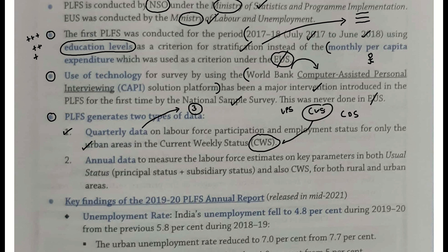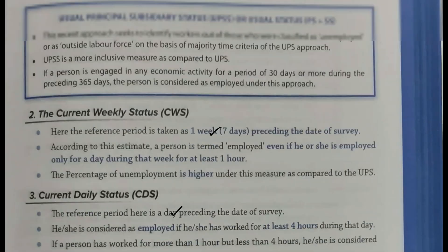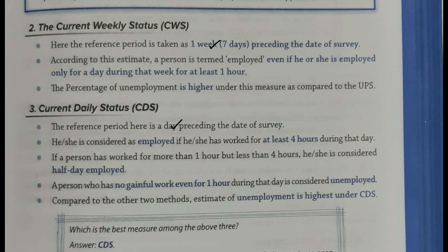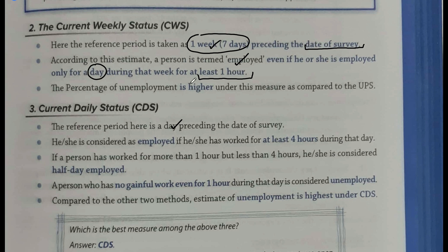Usme se Current Weekly Status ko preference di jaati hai. Current Weekly Status ke andar hum log reference period 7 din — pichle ek hafte ko lete hain, us date se jis date par survey conduct hona hai, usse ek hafte poora poora pehle. Yahan par ek cheez humne padhi thi: ek person ko employed tab maan liya jaayega, even if that person, if he or she, agar woh ek din ke liye bhi employed hai during that one week period, for at least one hour also. Aur yahan par percentage nikalta hai woh kaafi higher nikalta hai.